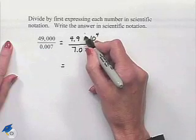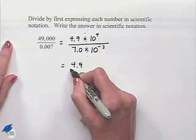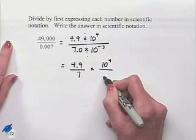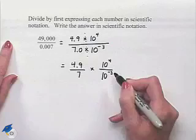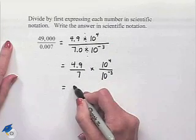We can actually see that since we're doing multiplication, we can write this as 4.9 divided by 7 multiplied times 10 to the fourth divided by 10 to the negative 3rd. 4.9 divided by 7 is going to give us a 0.7.